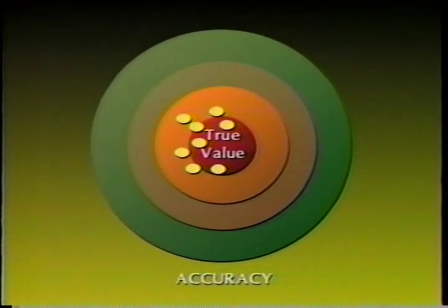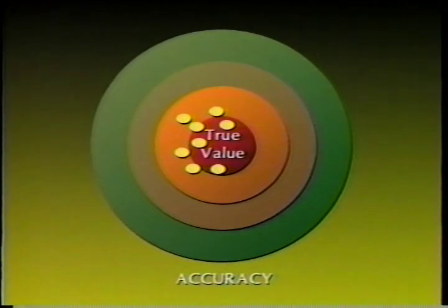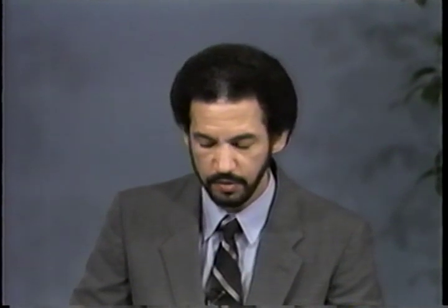In the following example, we can see that the measurements are closely grouped and are also very near the true value. Many factors affect accuracy. These include instrument precision, field procedures, and environmental factors. We reviewed how poor instrument adjustment also adversely affects the accuracy of field data.